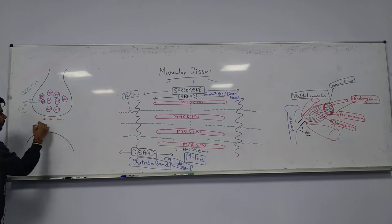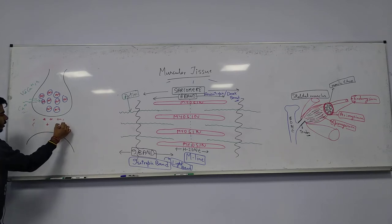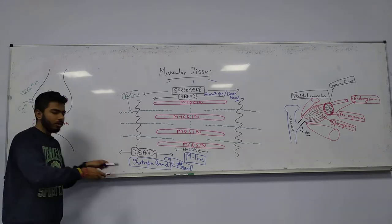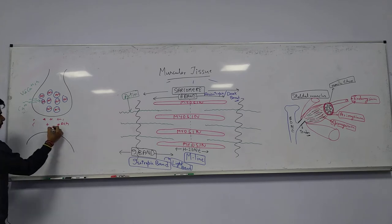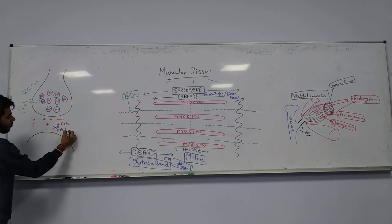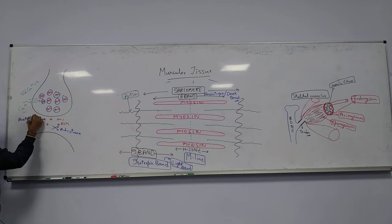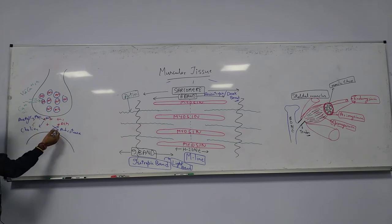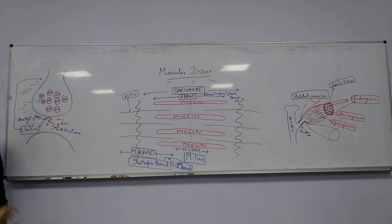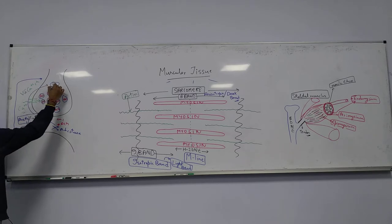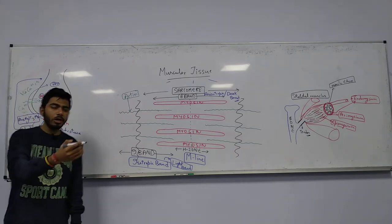At the same time we have acetylcholinesterase enzymes, which cleave acetylcholine into acetyl coenzyme A and choline. Choline can be transported back into the presynaptic cleft, and acetyl coenzyme A is transported back to the mitochondria. Acetyl-CoA comes from the mitochondria; choline comes from outside to reform acetylcholine inside the synaptic vesicle.